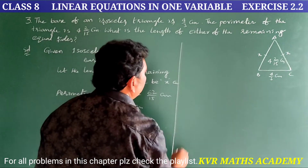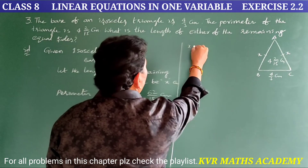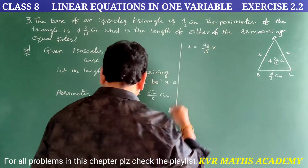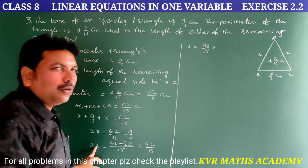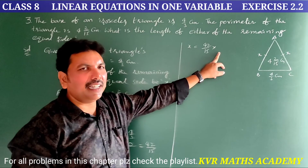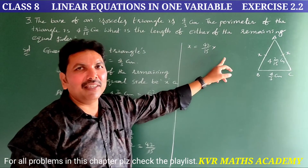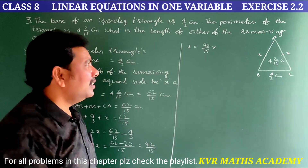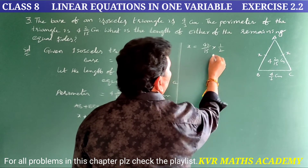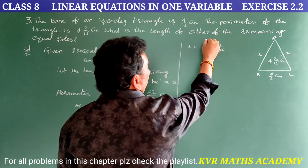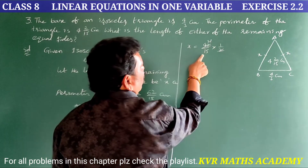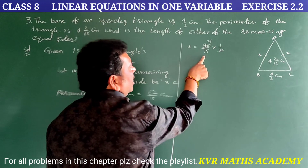Then x = 42/15 ÷ 2 = 42/30, which can also be written as 1/2 × 42/15 = 21/15 = 7/5. So x = 7/5 centimeters.